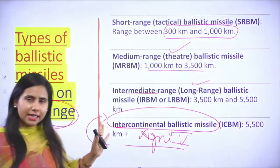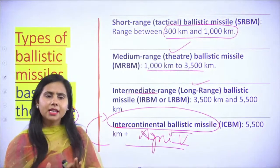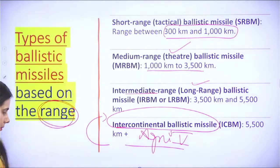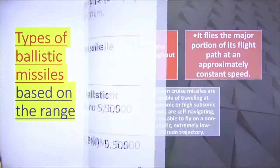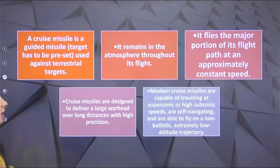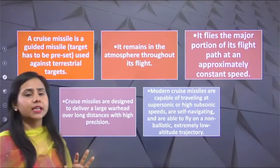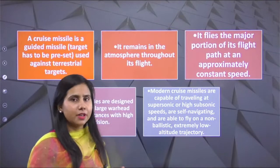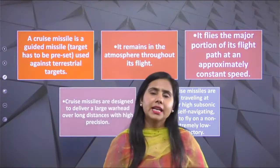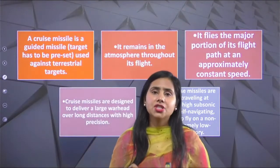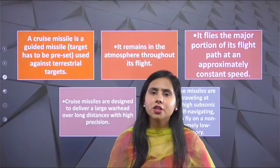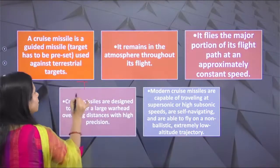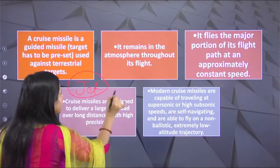So these were the types of ballistic missiles — by range and by target. Now let's move forward to cruise missiles. What is a cruise missile? The most major difference is that a cruise missile relies on jet technology — its engine is jet-based.